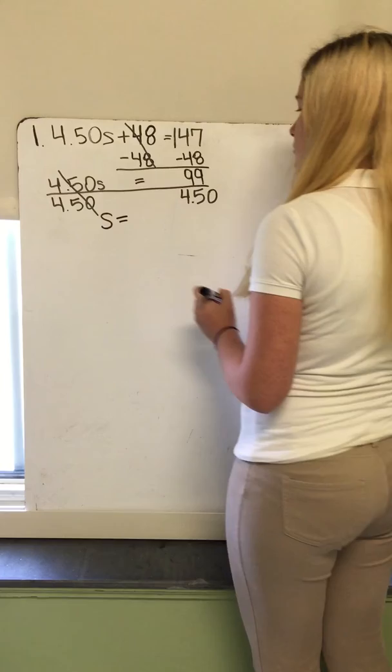99 divided by $4.50 gives you 22. So S equals 22.